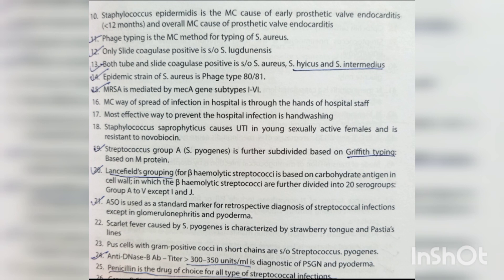Lancefield's grouping for beta-hemolytic streptococci is based on carbohydrate antigen in the cell wall, dividing them into 20 groups (A to V, except I and J). ASO is used as a standard marker for retrospective diagnosis of streptococcal infections, except in glomerulonephritis and pyoderma. Scarlet fever caused by Strep pyogenes is characterized by strawberry tongue and Pastia's lines. Pus cells with gram-positive cocci in short chains are suggestive of Streptococcus pyogenes.